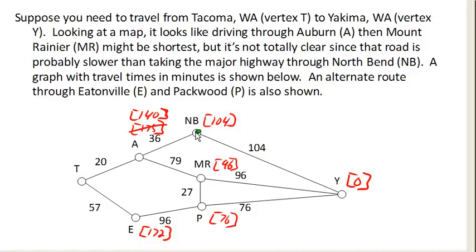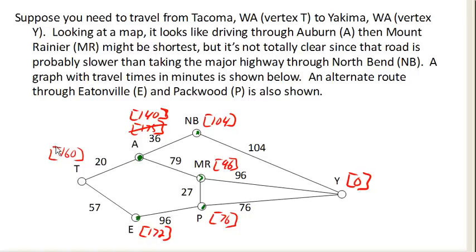All three of those vertices have been visited. We move to the next shortest vertex and work backwards: 140 plus 20 is 160. Now we're done with that vertex. Coming down here, 172 plus 57 is certainly bigger than 160, so we don't care about that one. We have found our shortest path — a total travel time of 160, routing through Auburn and North Bend down to Yakima. That is the shortest path found through Dijkstra's algorithm.